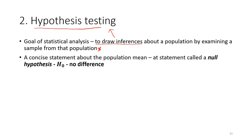A hypothesis is a concise statement about a population mean. The statement we call the null hypothesis assumes no difference. For example, our hypothesis might be that the population mean is equal to 3.5 cm.